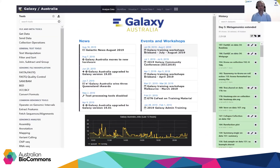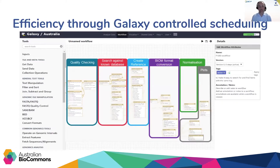Looking at what Galaxy actually looks like: it's a web interface with approximately a thousand different tools on the left-hand side, with text-based contextual searching to help narrow them down. Tools are grouped into functional categories based on research such as ChIP-seq, RNA-seq and variant calling. The right-hand side contains a completed history — in this case for metagenomics analysis of a complex fecal sample. The middle of the screen is interactive between news, events, tools and data.